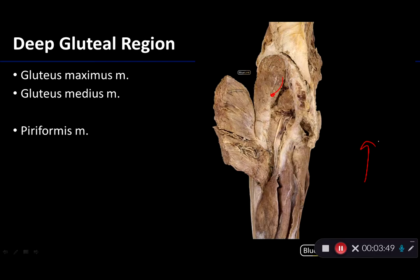Medius and minimus are both innervated by the superior gluteal nerve, and if there's an issue with that nerve — a lesion or some sort of injury — that can lead to the Trendelenburg sign or Trendelenburg gait. That's when the hip tends to buckle whenever there's only support from the same-sided limb, so there isn't a maintenance of posture at the side of the supported hip when the opposite limb is raised.